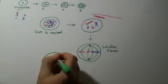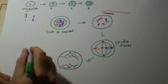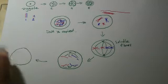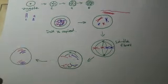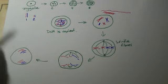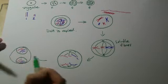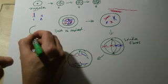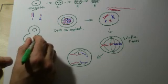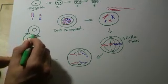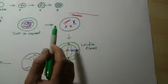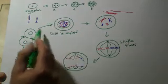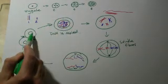Half of the chromosomes go one way, half go the other. We end up with two separate ends of the cell, with the original chromosome pairs now separated. There's a step we've missed out here, which is actually quite an important stage, and it comes between these two stages.